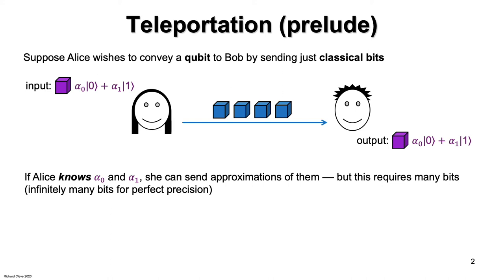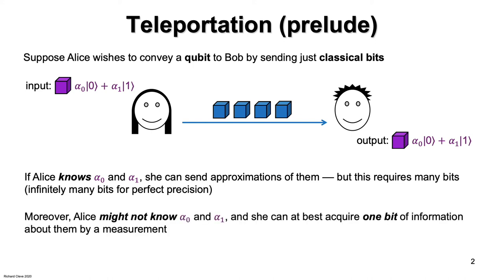But it's actually much worse than that, because Alice might not know what alpha0 and alpha1 are. And she could try to measure her qubit, but that would actually not work out well, because then she would only receive one bit of information about the state, and she would destroy the state. So it looks very difficult.